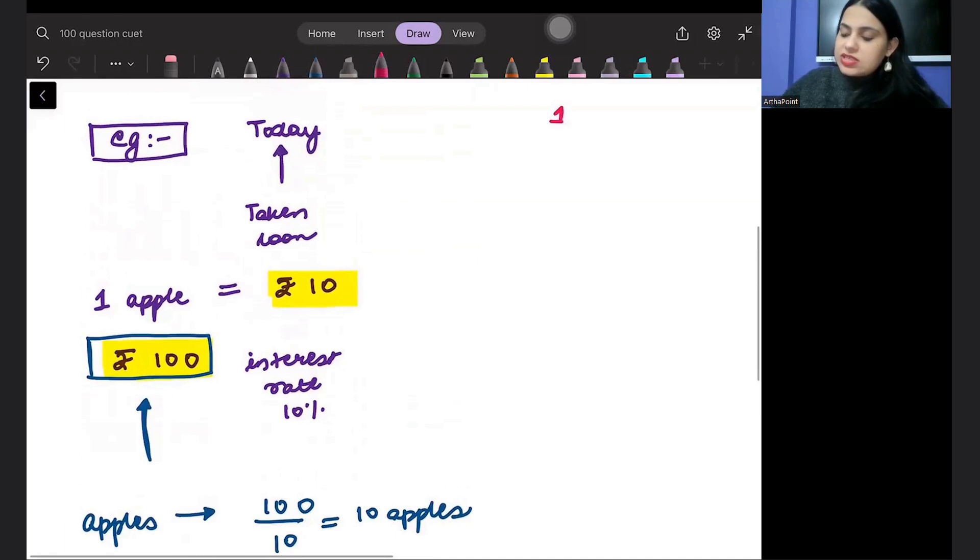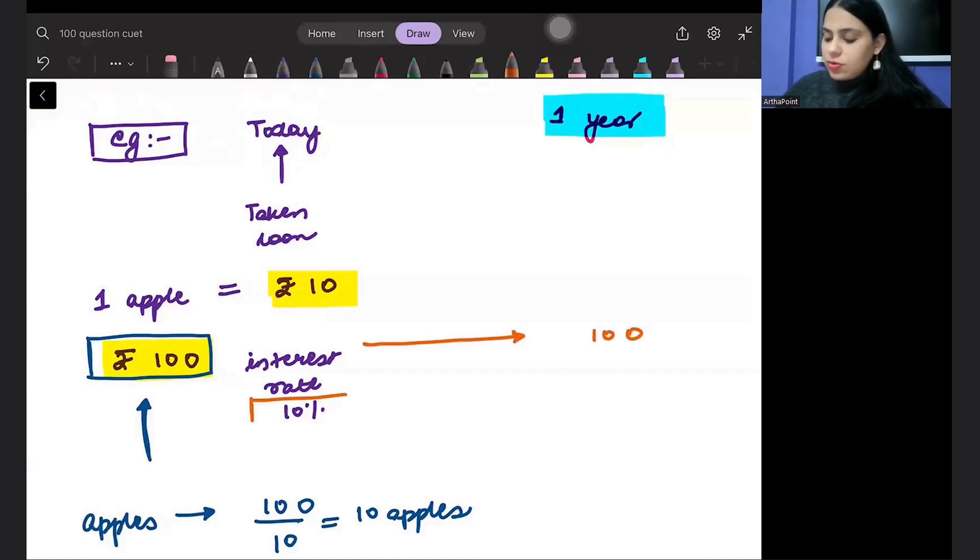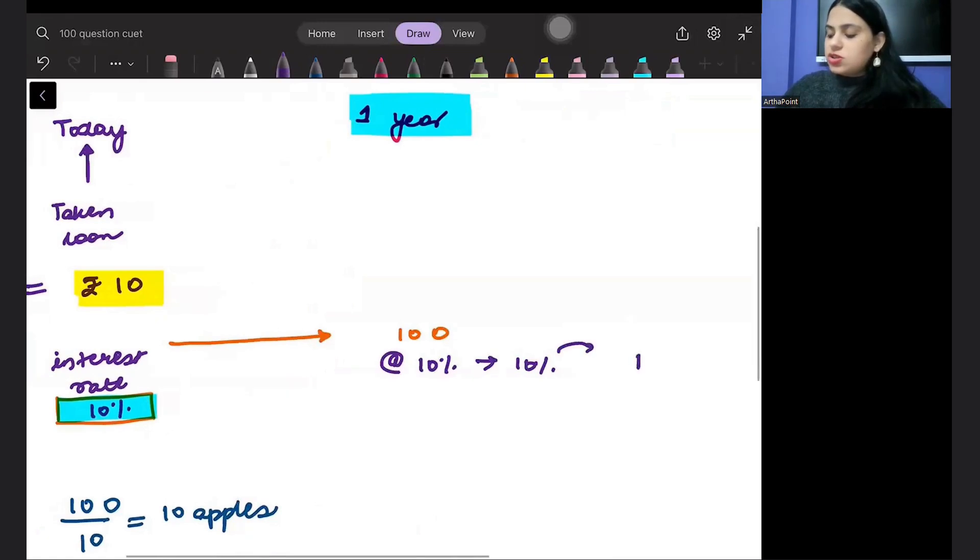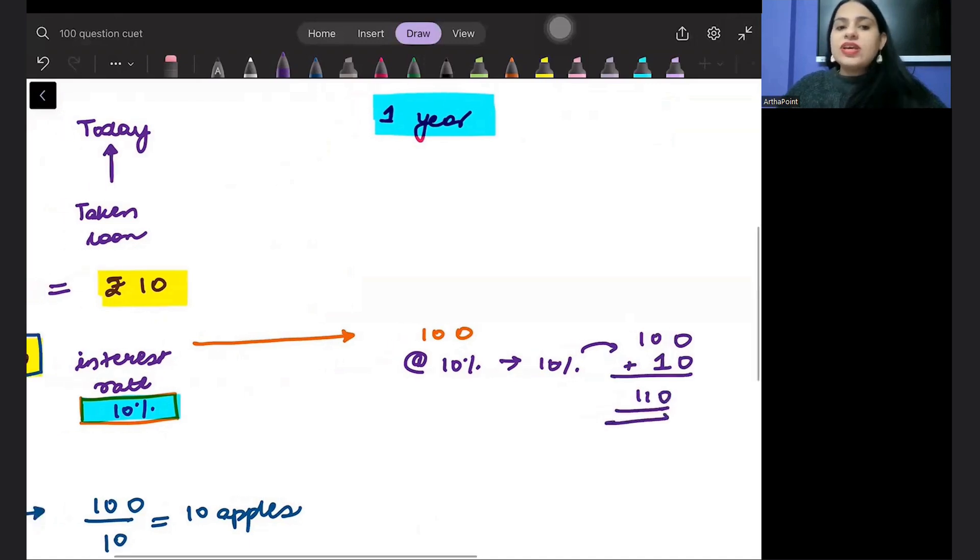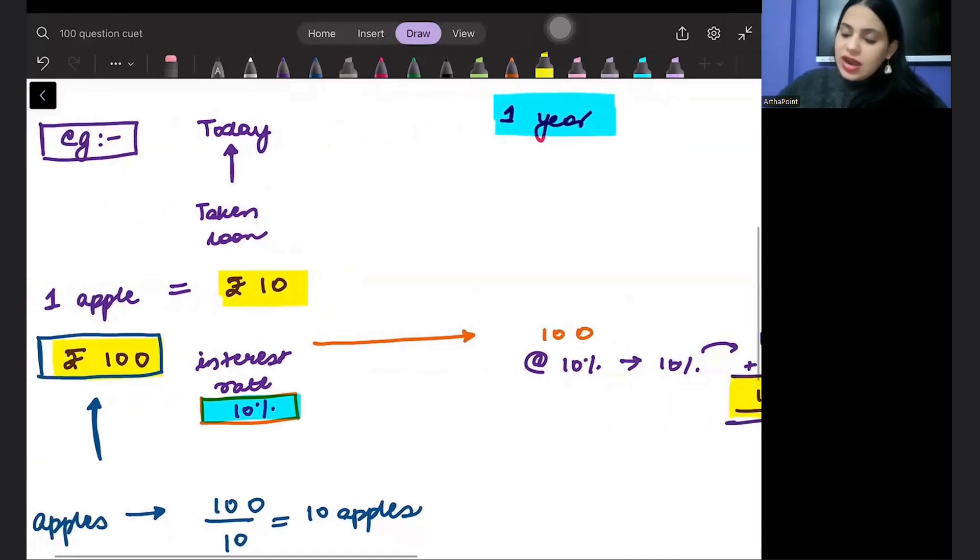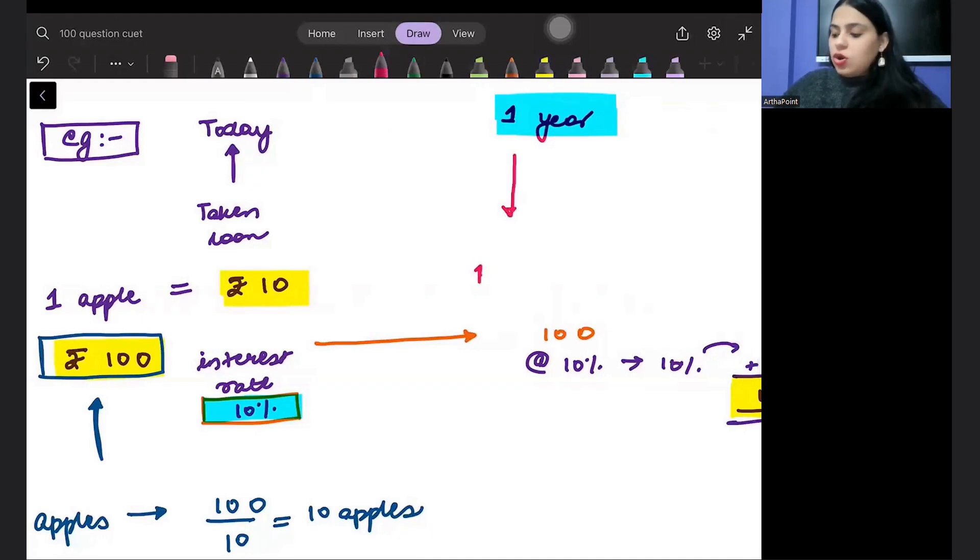After one year, you have to repay 100 rupees. You have to return back 110 rupees. Inflation came and now one apple costs rupees 20. One apple is 20 rupees.